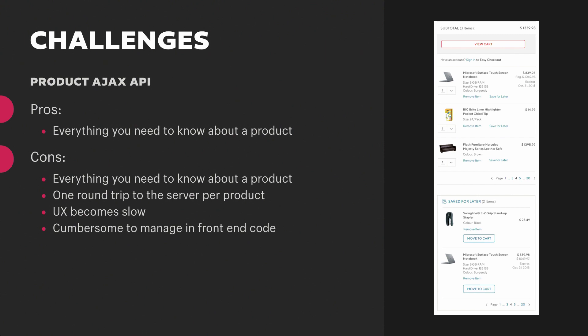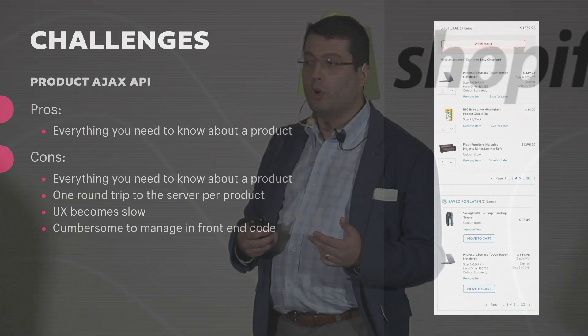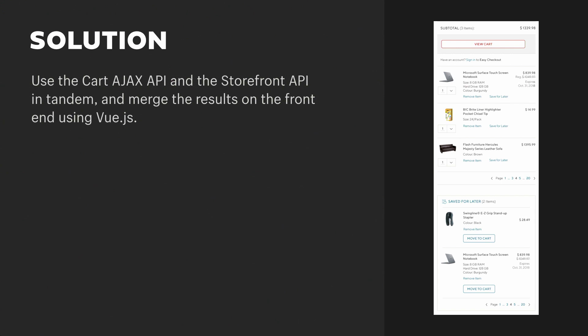Our next step was to turn to the product Ajax API, which can tell you everything you need to know about a product — but that's part of the problem. You're requesting a lot of data you may not need, and you're making a round trip to the server for every unique product in your cart. It slows down the more products are in the cart and makes it cumbersome to manage with your front-end code. The solution is to use the cart Ajax API and the Storefront API in tandem, merging the results on the front-end using Vue.js.